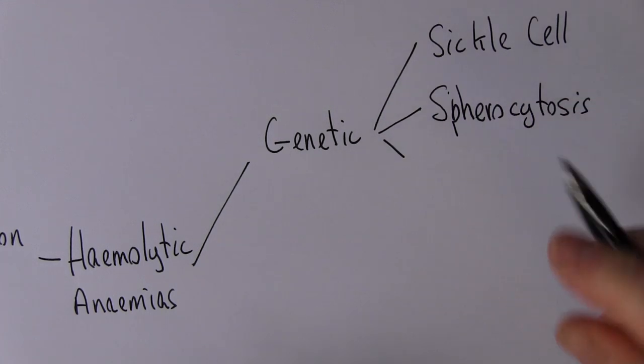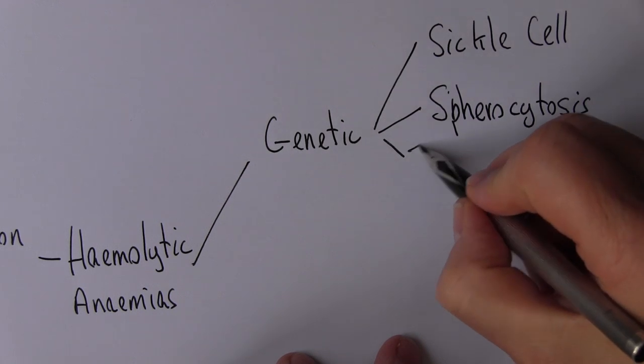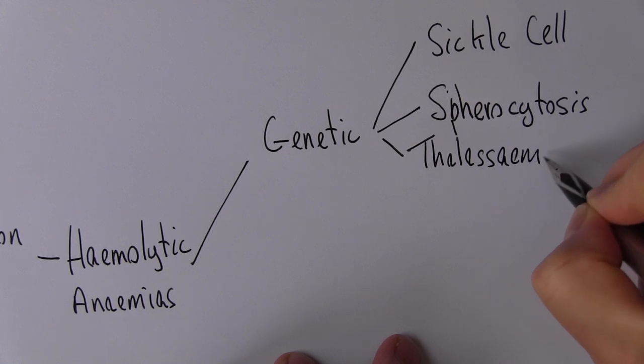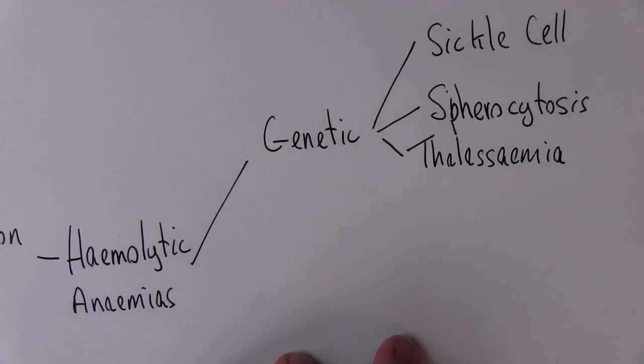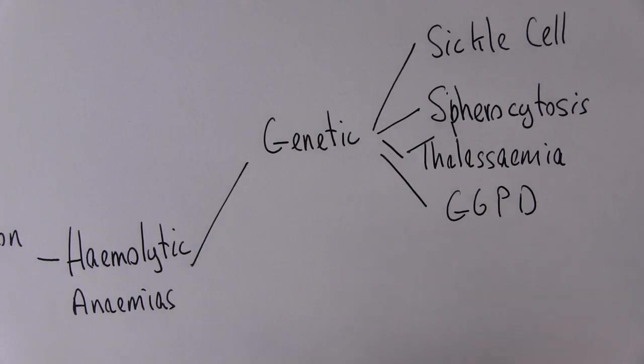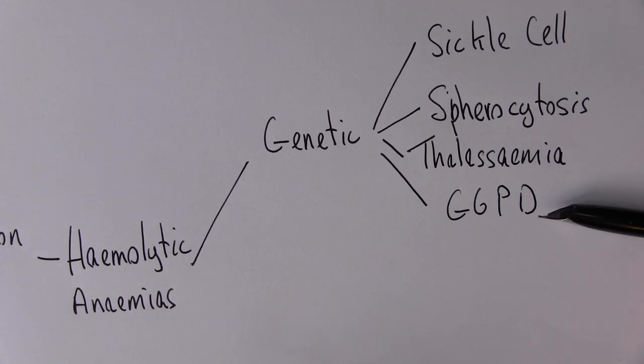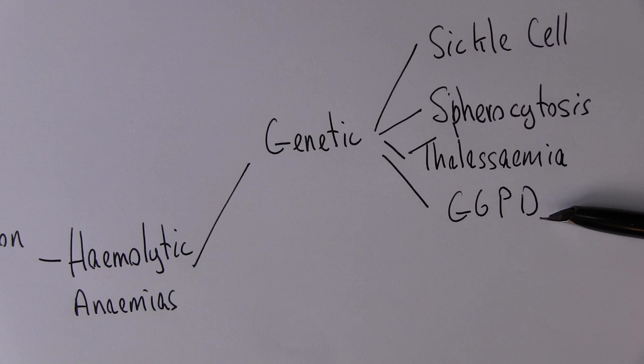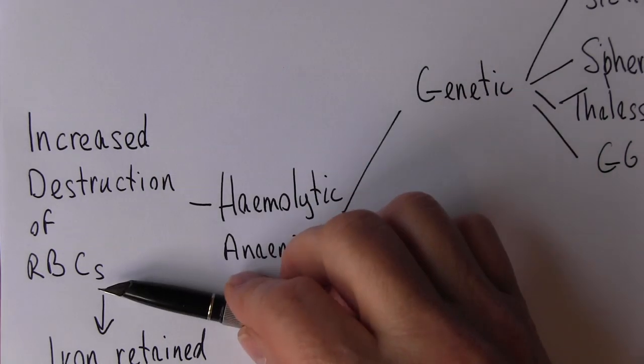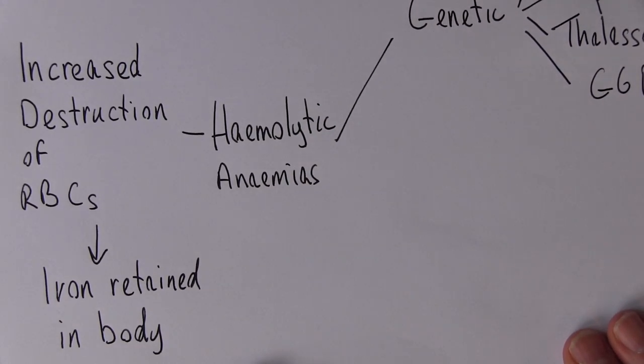Or an abnormality of hemoglobin can also cause hemolysis, such as thalassemia. You might have heard of the enzyme deficiency G6PD, where there can be significant hemolysis if the patient is given particular foods or drugs. So there's these genetic causes of the hemolytic anemias, where we have increased destruction of the red blood cells, but the iron is retained in the body.